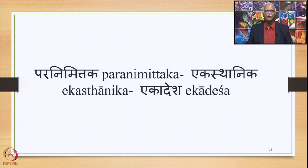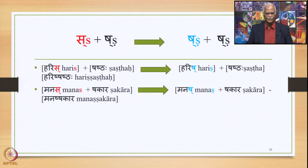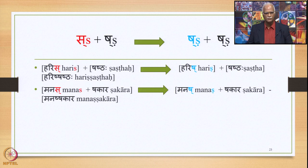Now, after having looked at Purvanimittaka Ekasthanika Ekadesha, let us look at Paranimittaka Ekasthanika Ekadesha. We have SA plus SHA as input and the output is SHA plus SHA. We have HARIS plus SHA. Here SA appears at the end of a Pada, so this Sandhi is between two Padas as part of the sentential combination. We have HARIS plus SHA, and the output generated is HARISH-SHA — so we get HARIS-SHA. Similarly, MANAS plus SHA as part of a compound: SA will be substituted by SHA and you get MANAS-SHA.